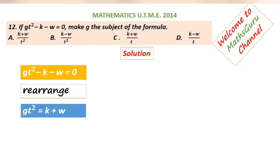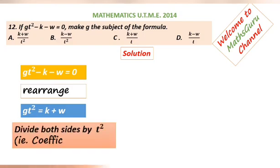So we have GT square is equal to K plus W. To make G the subject of the formula, we have to divide both sides by the coefficient of G, which is T square. So we divide both sides by T square.